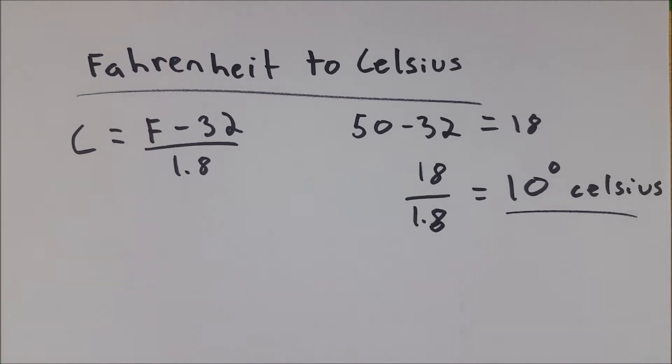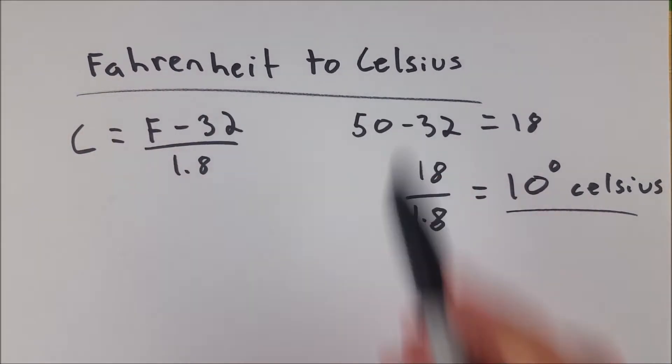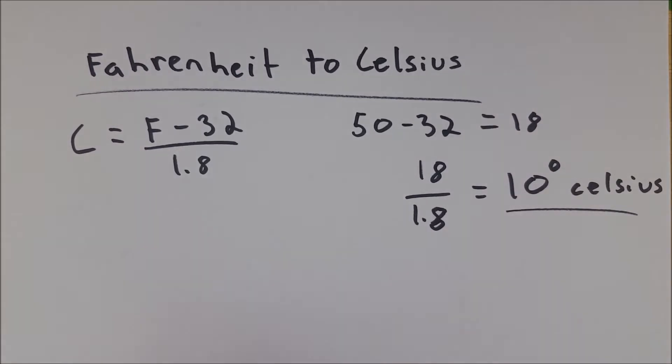I hope this video helped you understand how to take a measure in Fahrenheit and convert it to Celsius. You can quickly see how to do the opposite conversion by multiplying both sides by 1.8 and then adding 32, but I've got a video on that as well if you want to check that out.